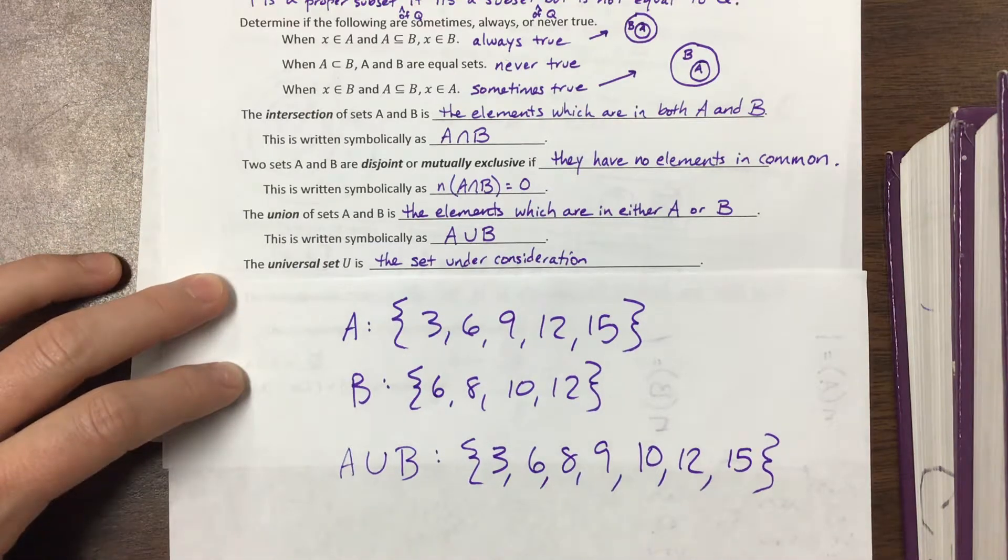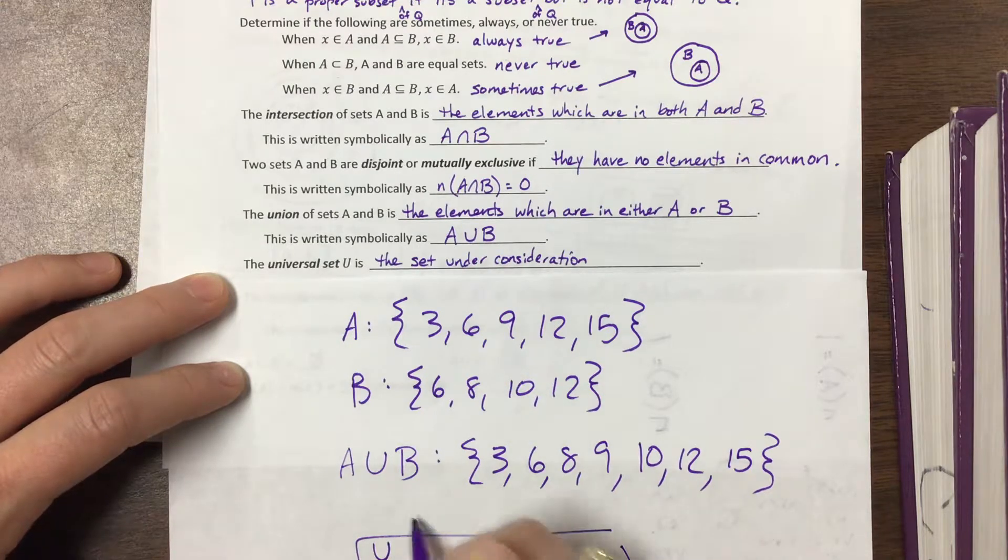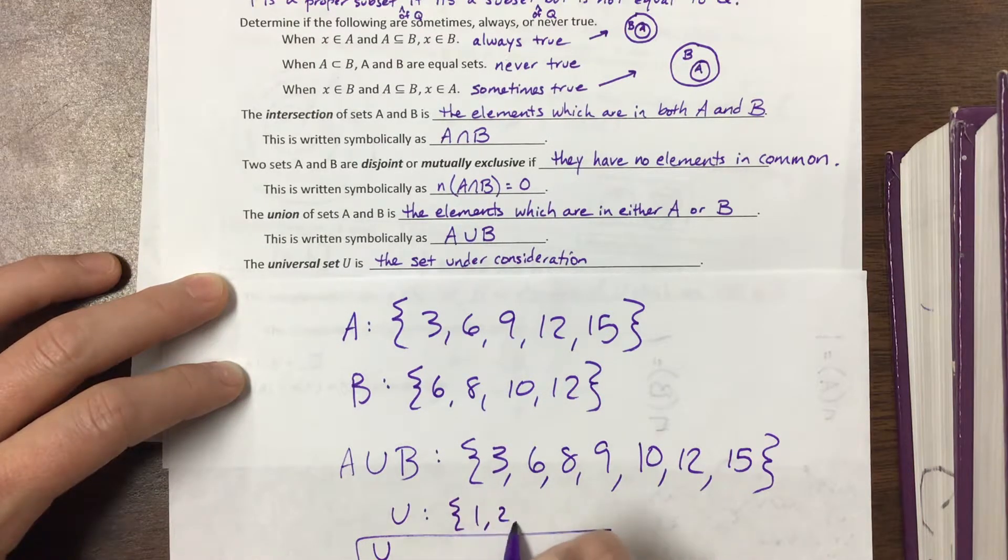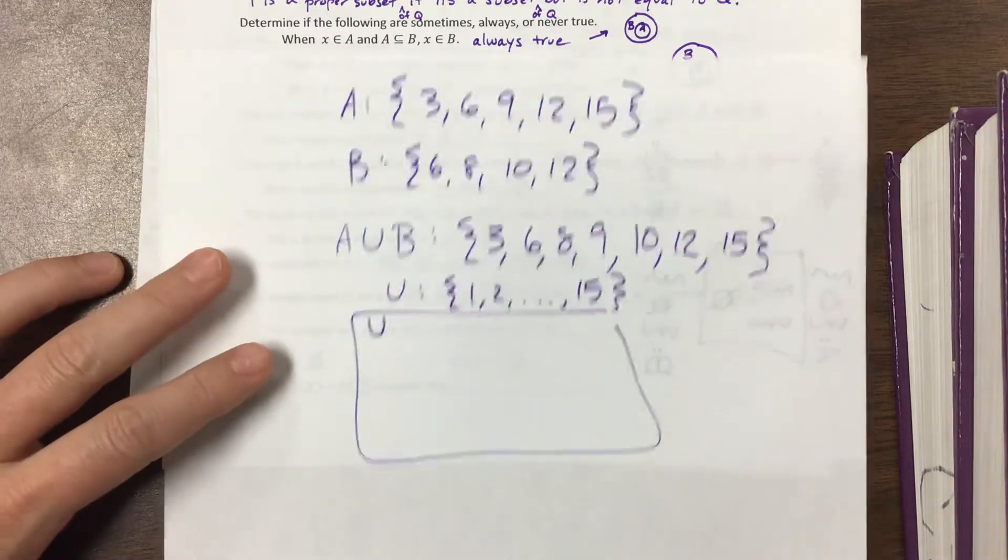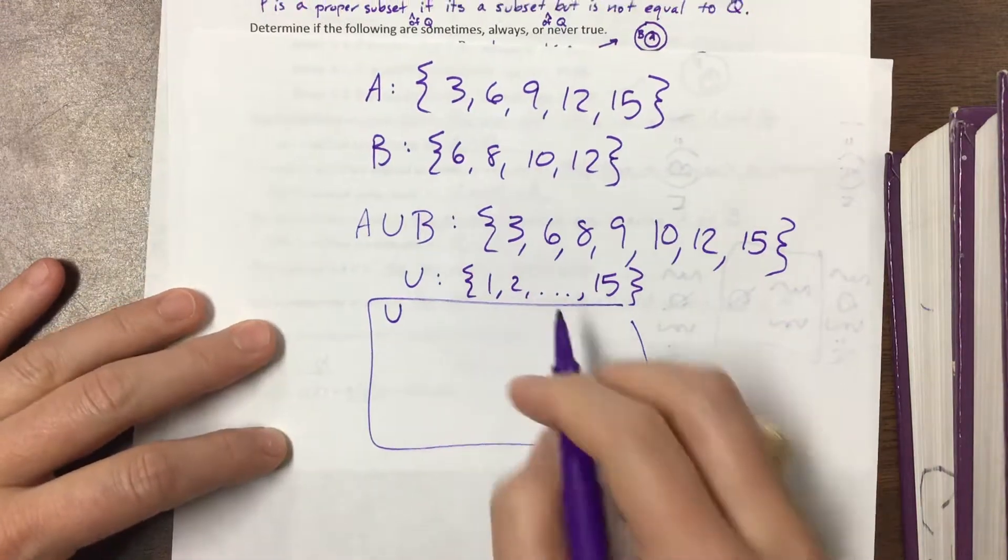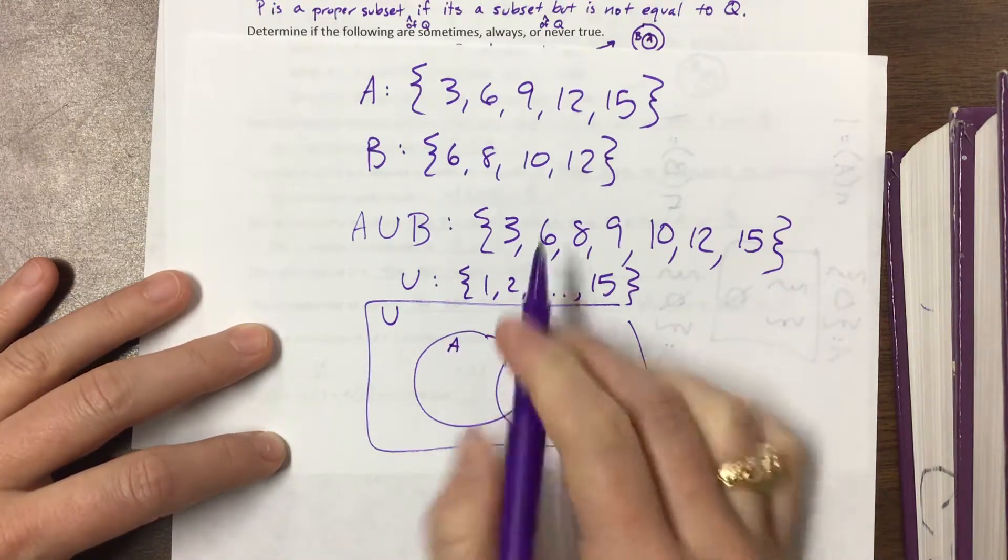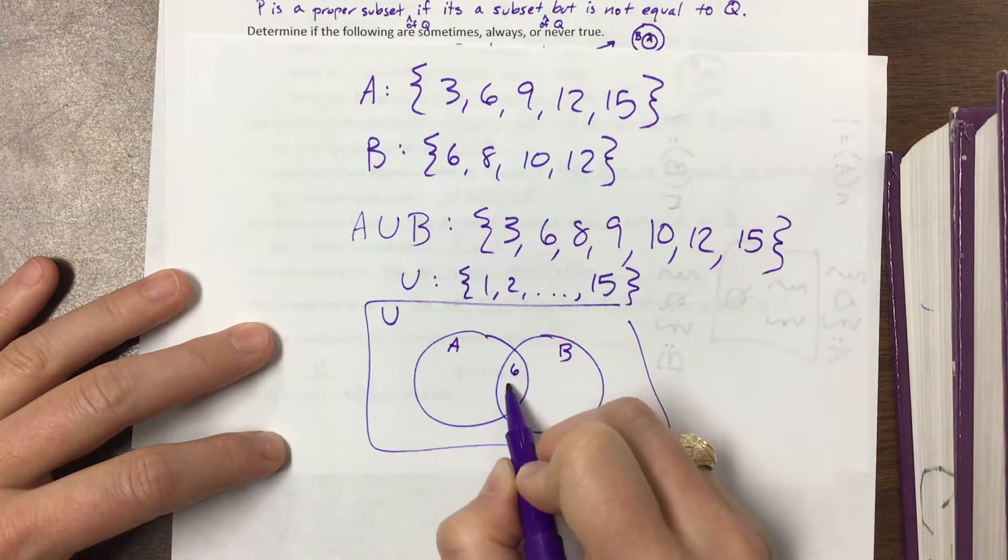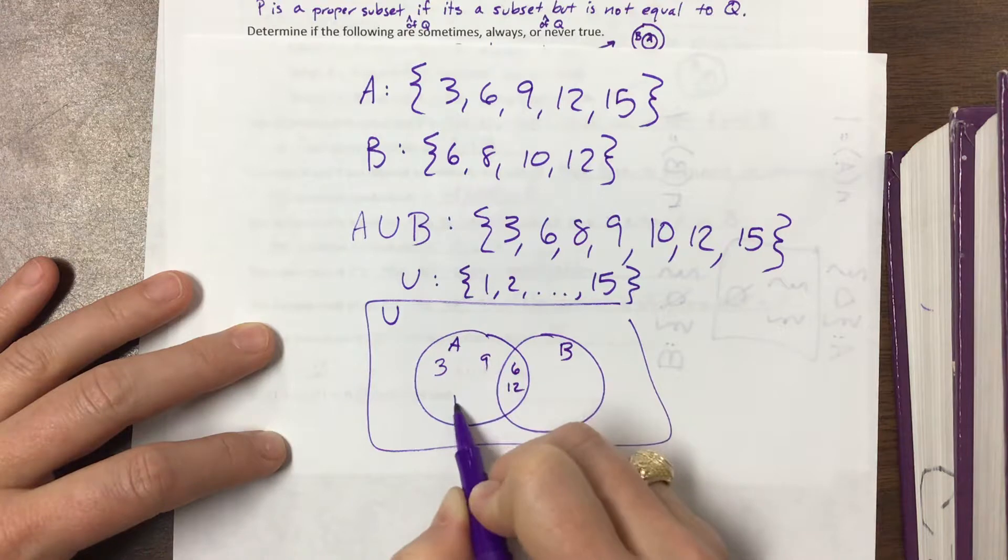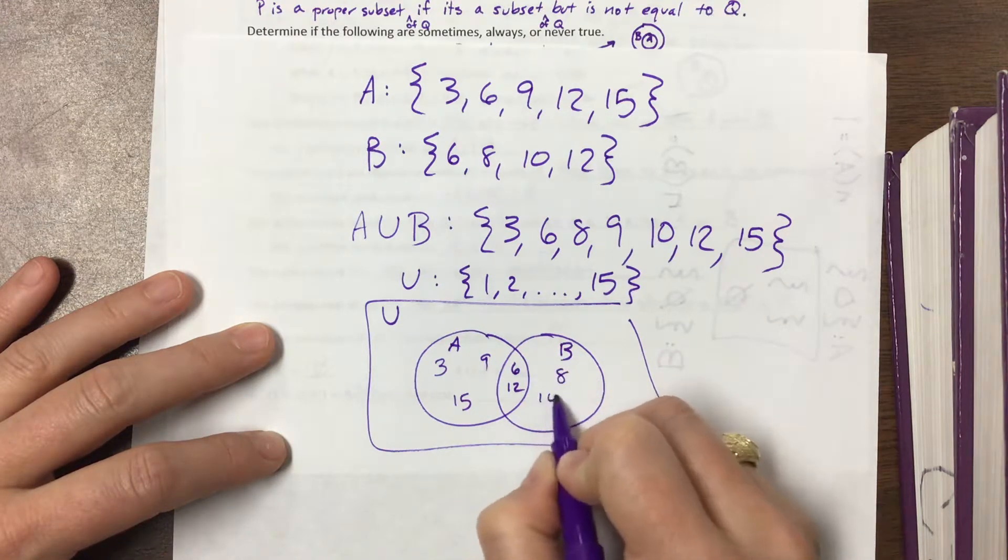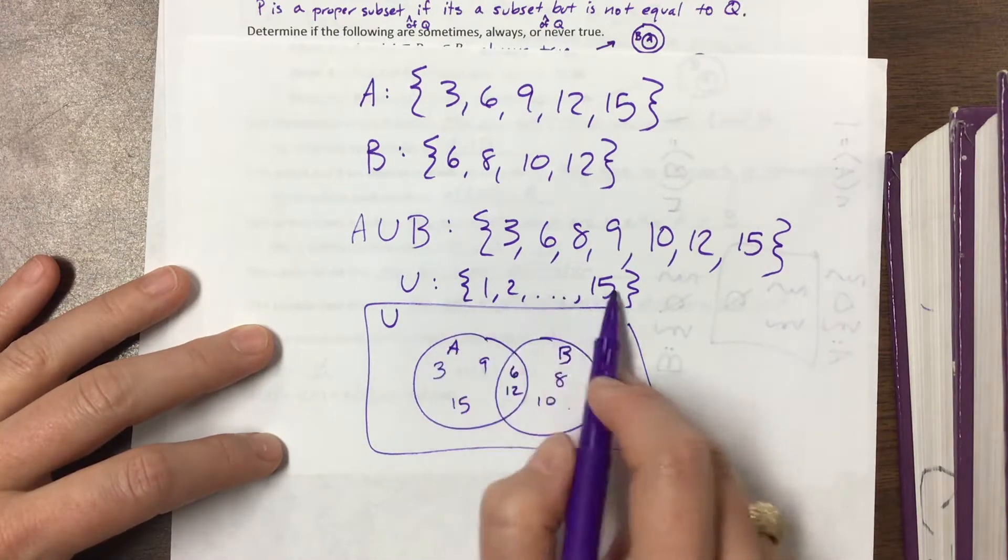So it might be that our universal set, in this particular case, our universal set may have been the numbers U would be {1, 2, all the way up to 15}. It's the integers from 1 to 15. So if I were to draw that, I could take these things and put them in a Venn diagram, and I could say here's A, here's B. The thing that overlapped between them, they both had 6, they both had 12. Then A had 3, it also had 9, it also had 15. B also had 8, 10, and 12 was already taken care of.